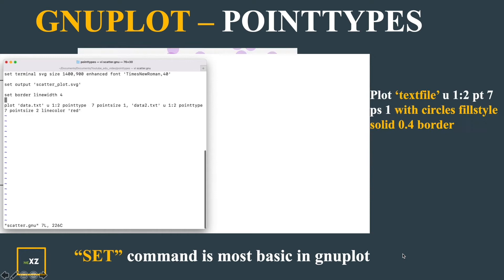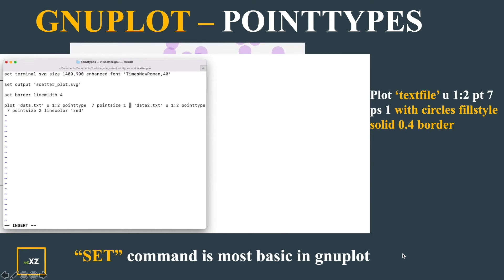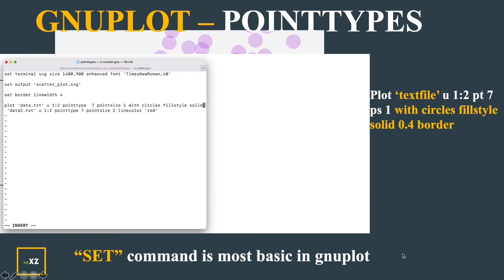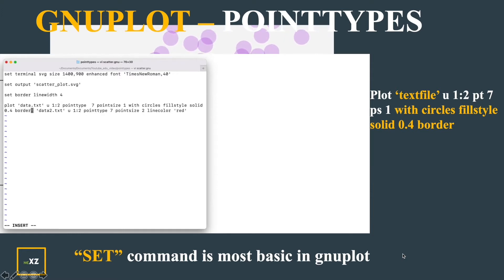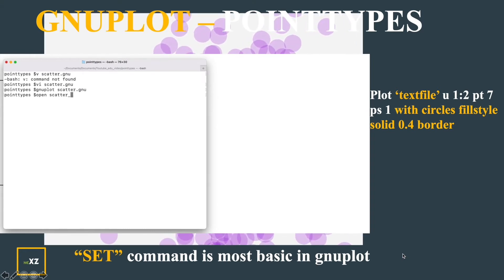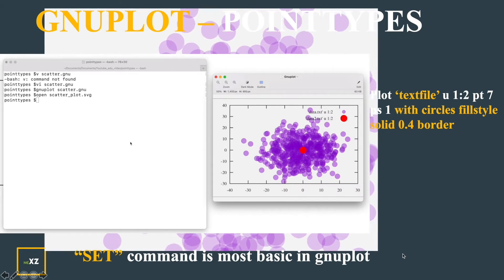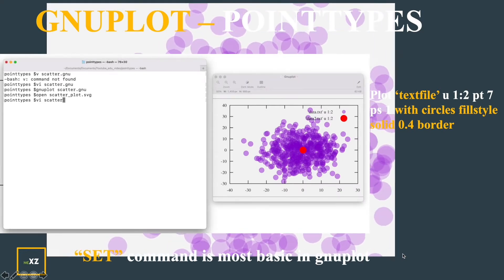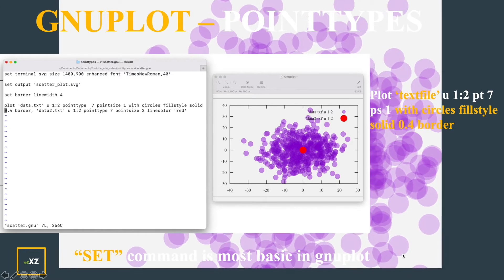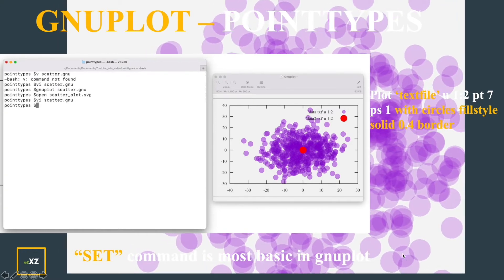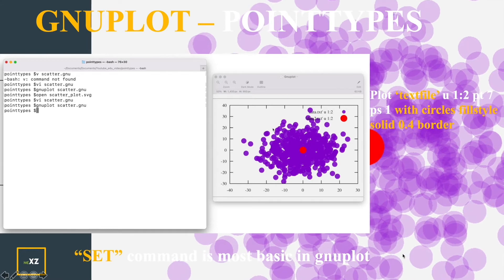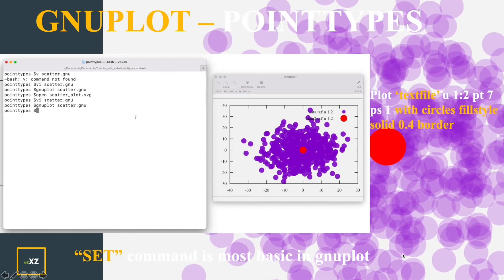Now I will use this to get a Transparent or Semi-Transparent Point Type. I use Width Circles, Fill Style, Solid, Point 4 which has a Border. I run New Plot Scatter.gnu and open my SVG file. You can see a very beautiful plot showing the probability distribution or the scatter density of my scatter plot. But if I give a solid fill style of 0.9, which is almost opaque, you cannot distinguish the density or the distribution of my scatter plot.